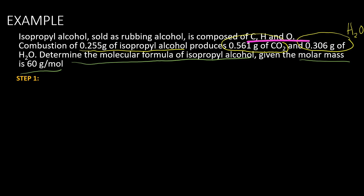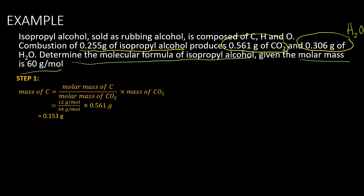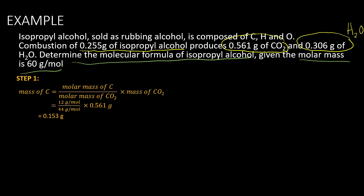To find the mass of carbon, we use the formula: molar mass of carbon divided by the molar mass of carbon dioxide, multiplied by the mass of carbon dioxide. The molar mass of carbon is 12 g/mol, the molar mass of CO₂ is 44 g/mol, and the mass of CO₂ given is 0.561 grams. This gives us 0.153 grams — the mass of carbon.